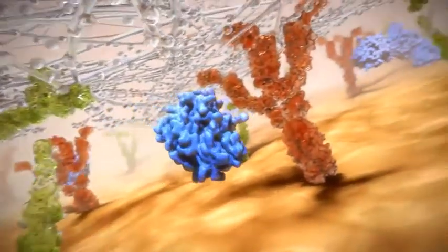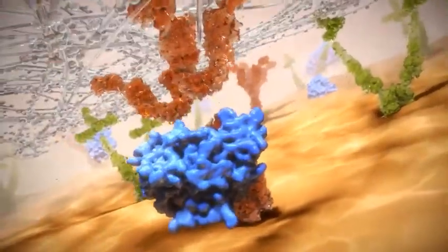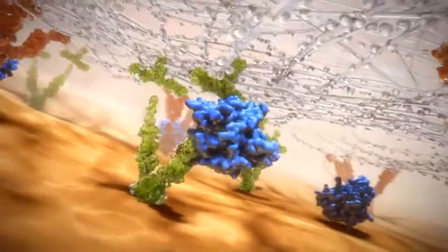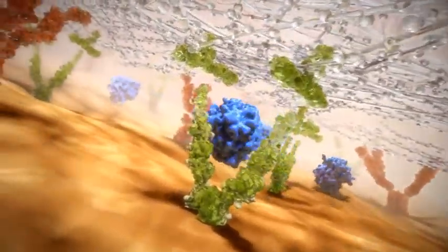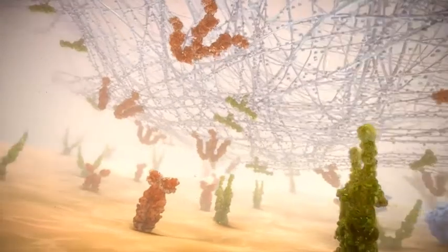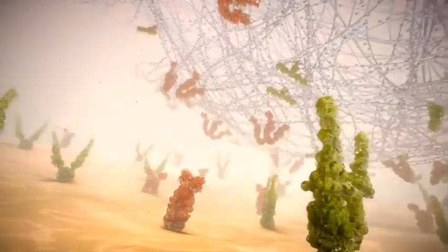Like plasmin, Jetrea intravitreal injection exerts enzymatic activity over fibronectin and laminin, which make up the protein matrix of the vitreous body and the vitreoretinal interface, inducing a clean separation of the vitreous from the vitreoretinal interface.